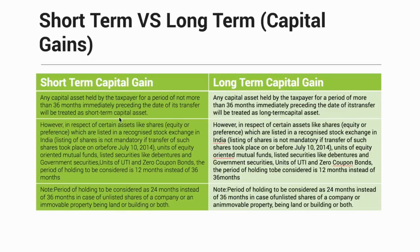So these are the three categories: 12 months, 24 months, and 36 months. Anything held beyond that specified duration would be treated as a long-term capital gain. For short-term capital gains there is a specific tax percentage, and for long-term capital gains there is a specific procedure to calculate the tax. We will cover those in detail in the upcoming videos.